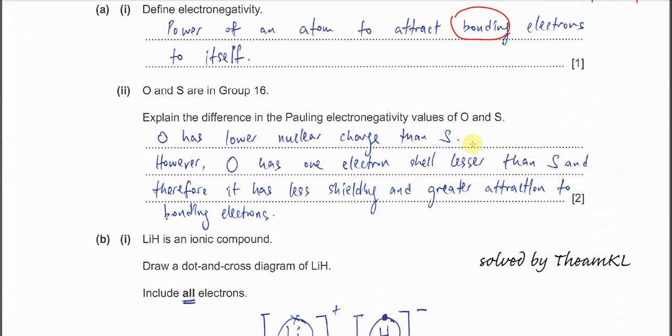Therefore, oxygen has fewer electron shells and less shielding. Let's examine this: oxygen has a lower nuclear charge than sulfur. Lower nuclear charge doesn't necessarily mean weaker attraction - we must consider shielding effects. Shielding plays a very important role in electronegativity.